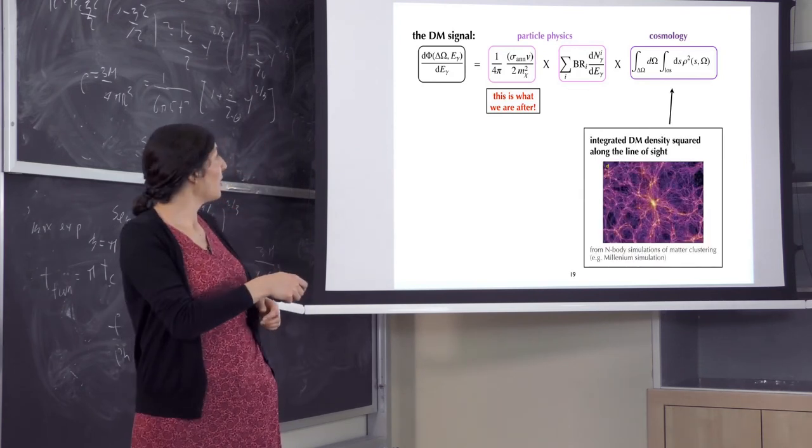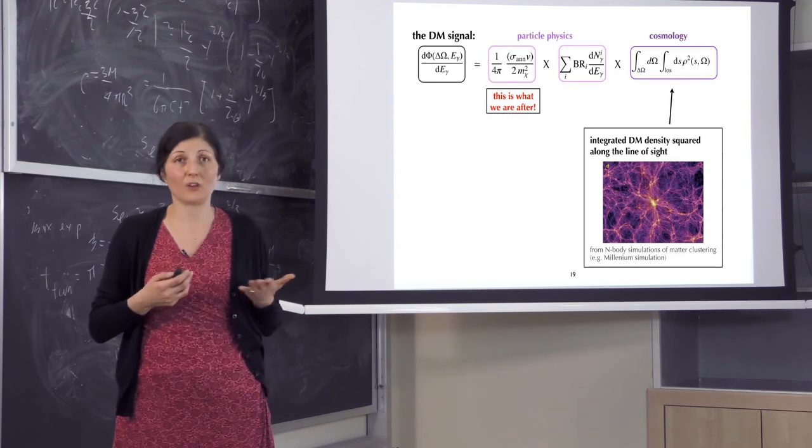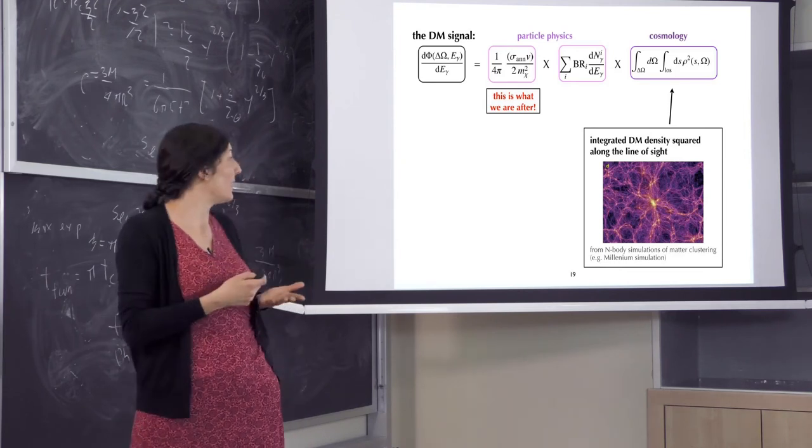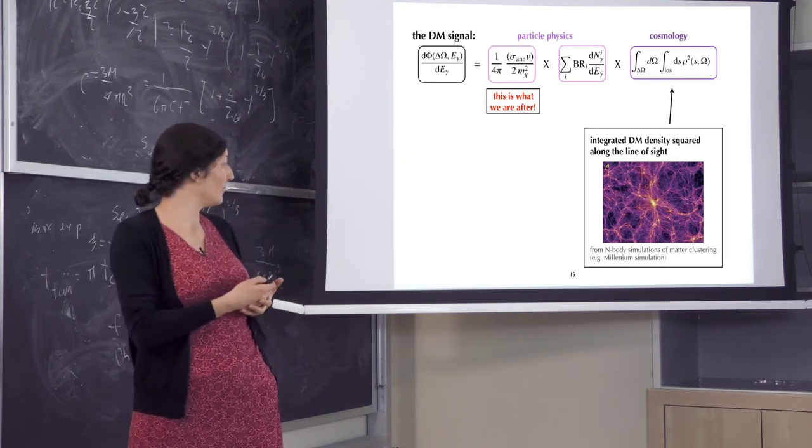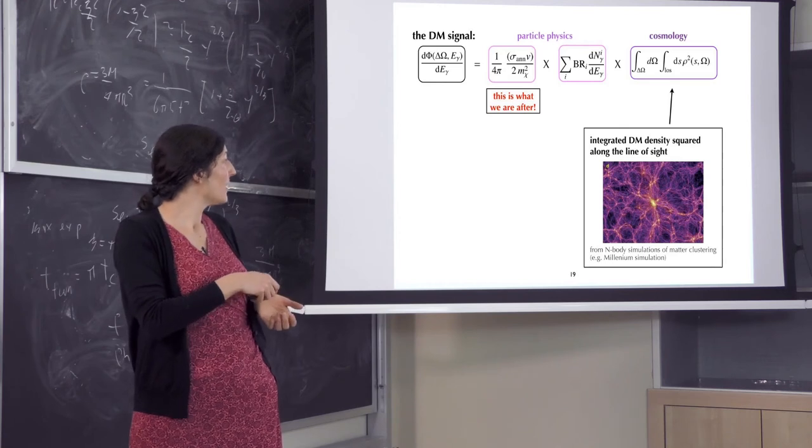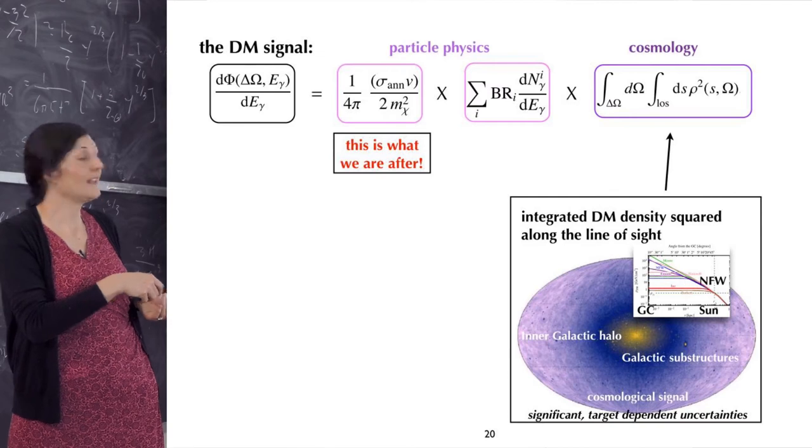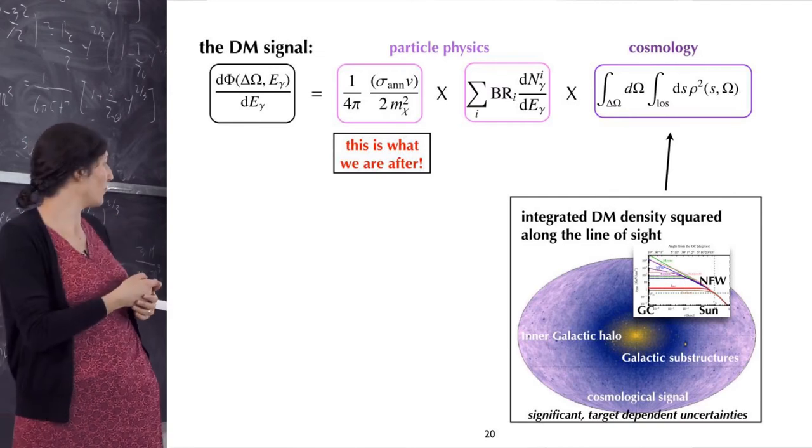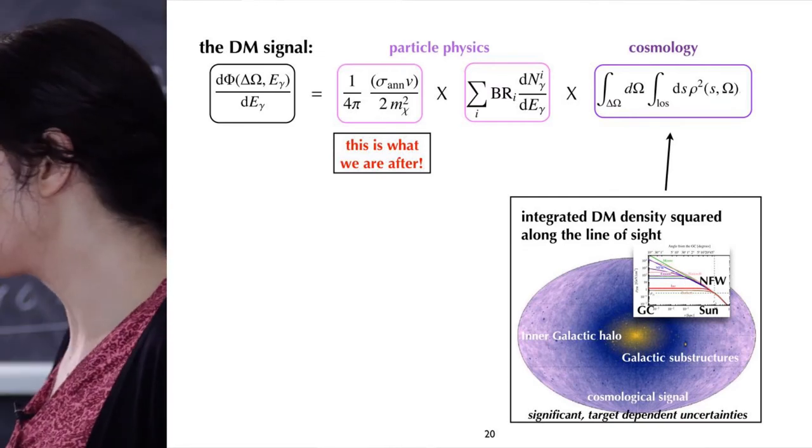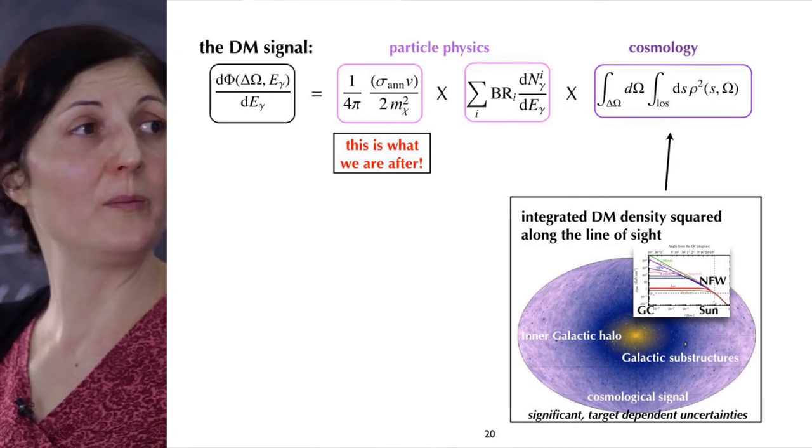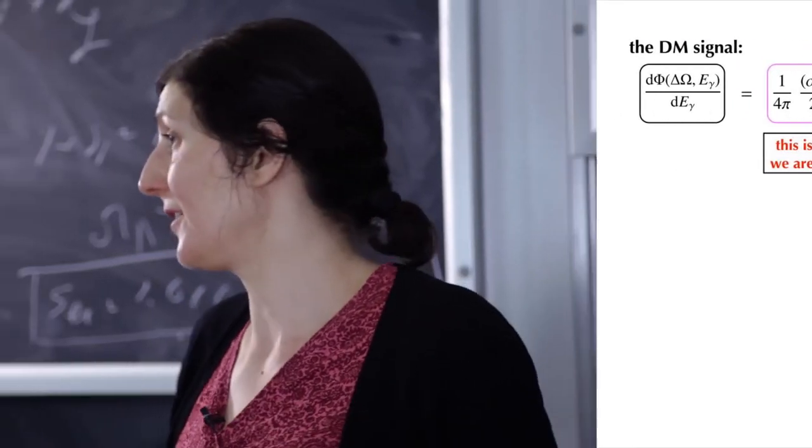Now if you focus on how much dark matter we have along a line of sight, how do we know that? We do not see dark matter. That is why it's called dark. We know that dark matter density is the highest in the center of the galaxy and then drops off as a broken power law. So basically if you want to look for dark matter, one of the brightest points is the center of our galaxy.